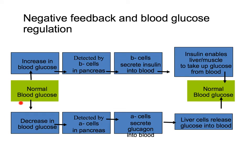On the other hand, when blood glucose falls — for example, after a period of fasting — this decrease is detected by the alpha cells in the pancreas. This causes the alpha cells to secrete glucagon hormone into the blood. Glucagon hormone acts on liver cells, causing them to respond in such a way that they release glucose into the blood. And this increases blood glucose levels back to normal.